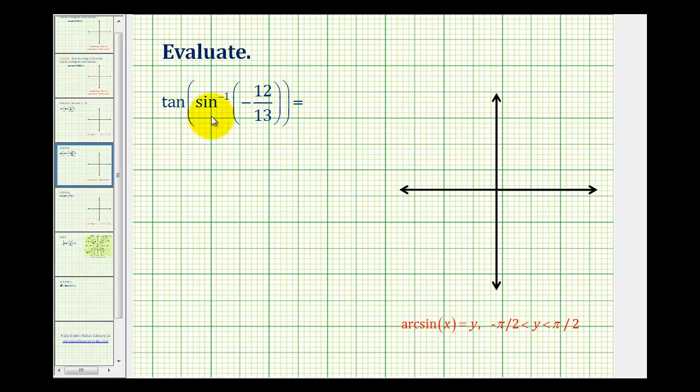We want to evaluate tangent of inverse sine of negative 12 thirteenths. Looking at the inner inverse trig expression, inverse sine of negative 12 thirteenths returns an angle, let's call it theta, that has a sine function value of negative 12 thirteenths.